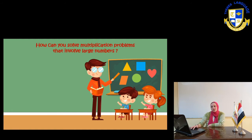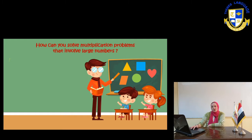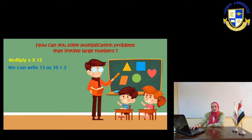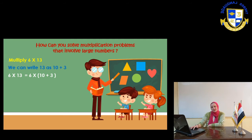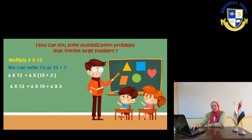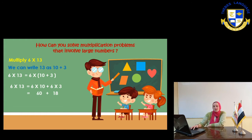How can you solve multiplication problems that involve large numbers? If you want to multiply 6 times 13, we can write 13 as 10 plus 3. So 6 times 13 can be 6 times 10 plus 6 times 3. 6 times 10 equals 60 plus 6 times 3 equals 18. After that, make 60 plus 18, so the result will be 78. So 6 times 13 equals 78.